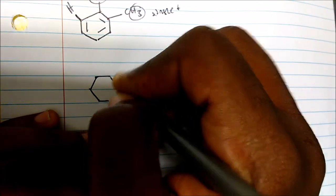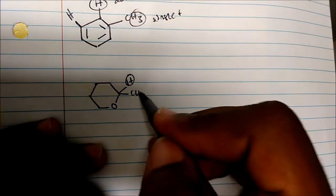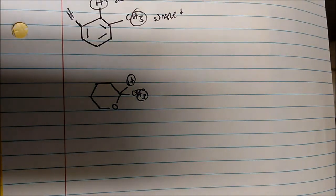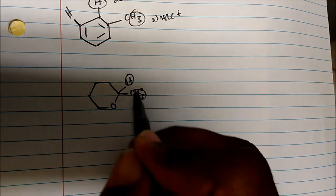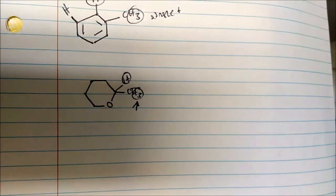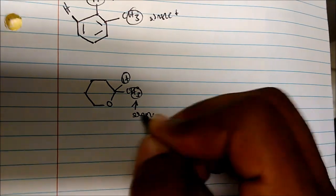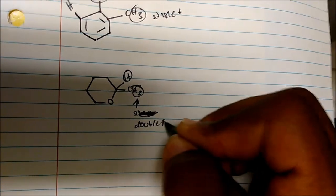Maybe you're given this ether. We have a hydrogen and we're asked to predict the splitting pattern around that proton and these three protons. Well, these three protons — looking at the next adjacent carbon — has only one hydrogen. So these three protons are equivalent and we will see a doublet, because one plus one is two.